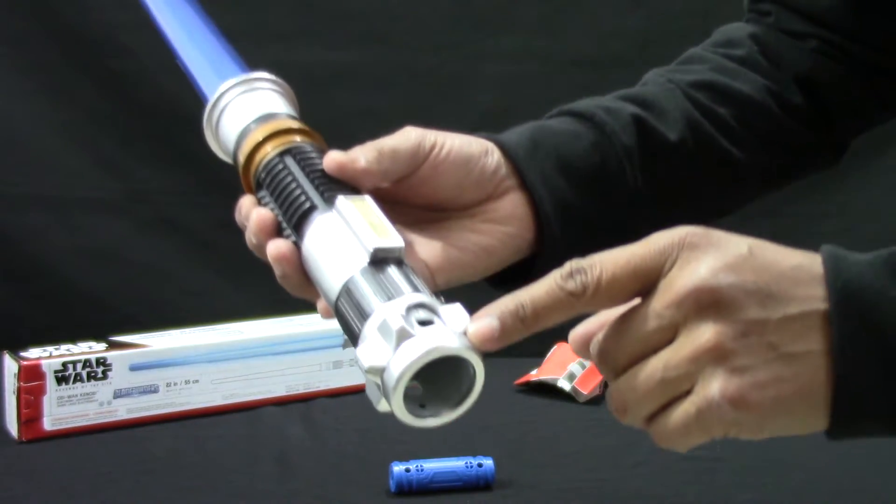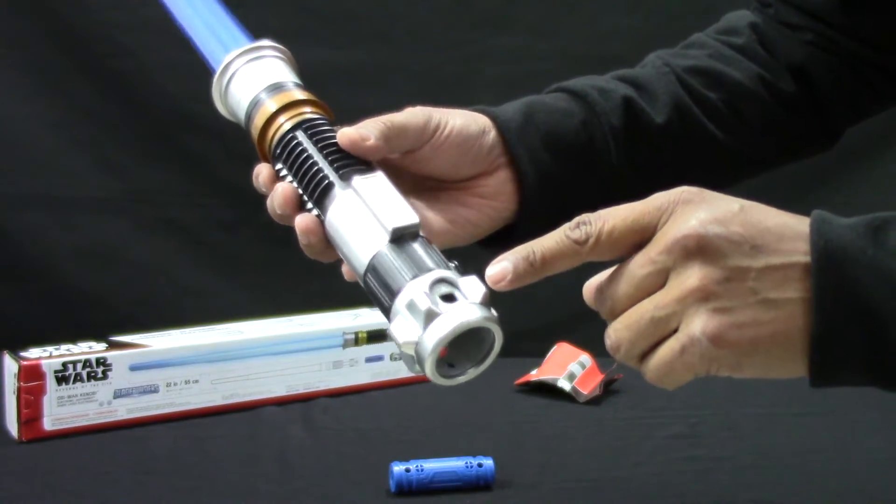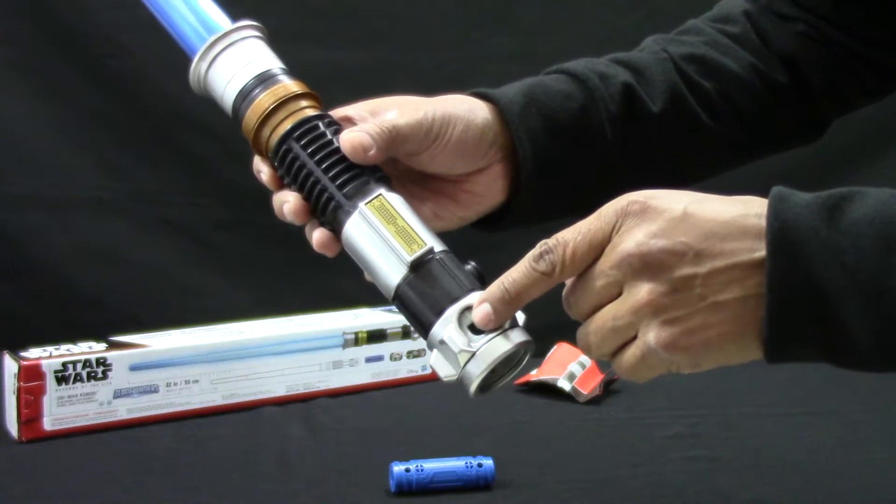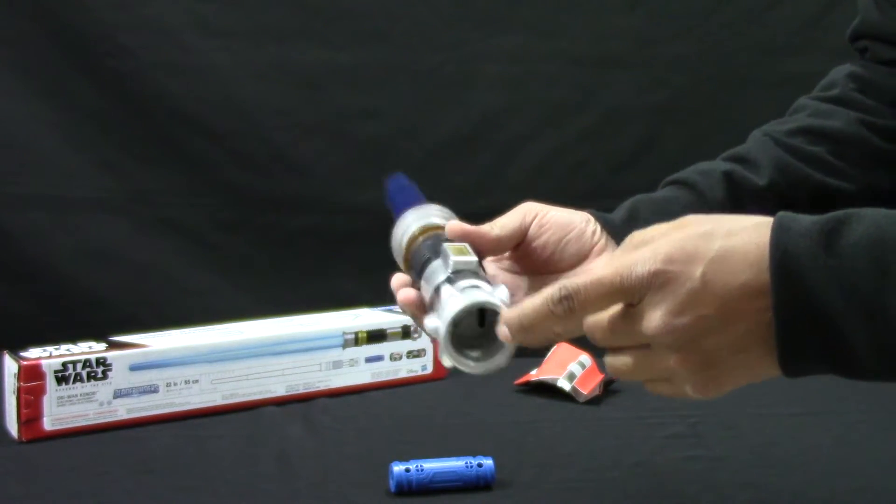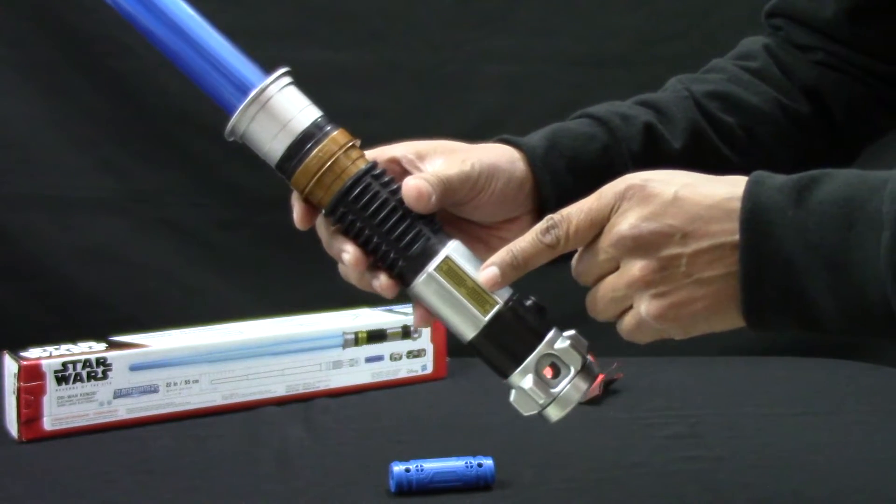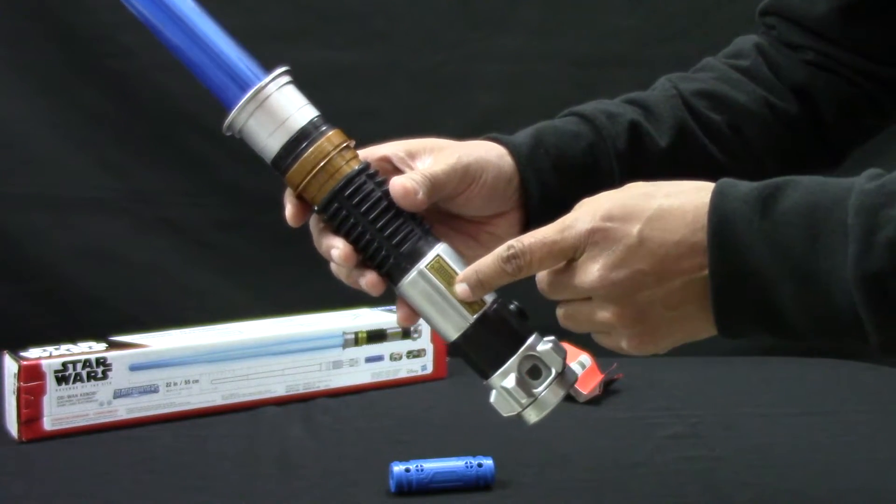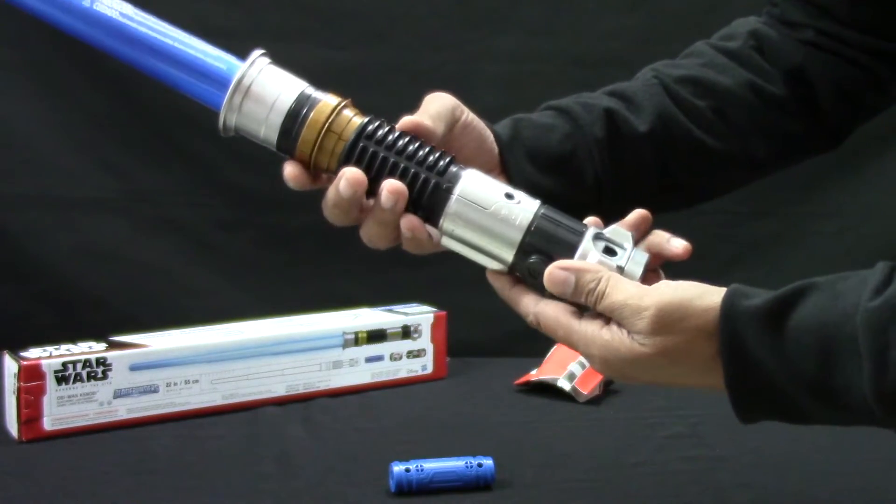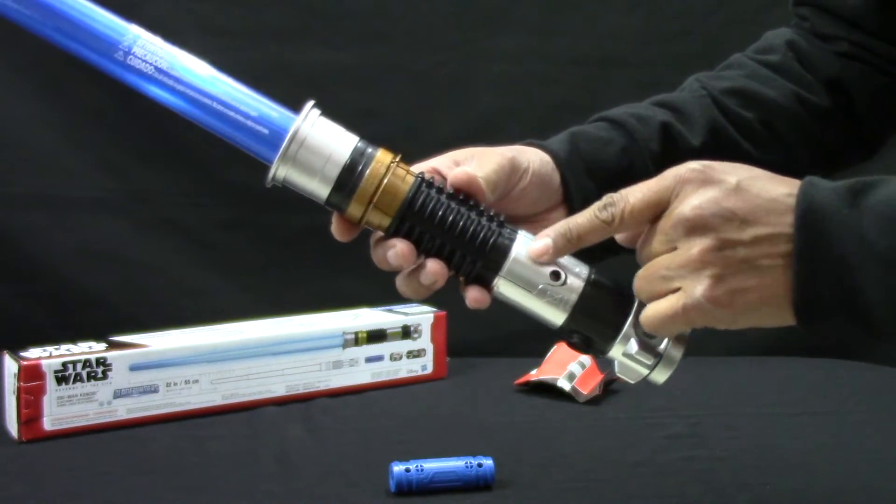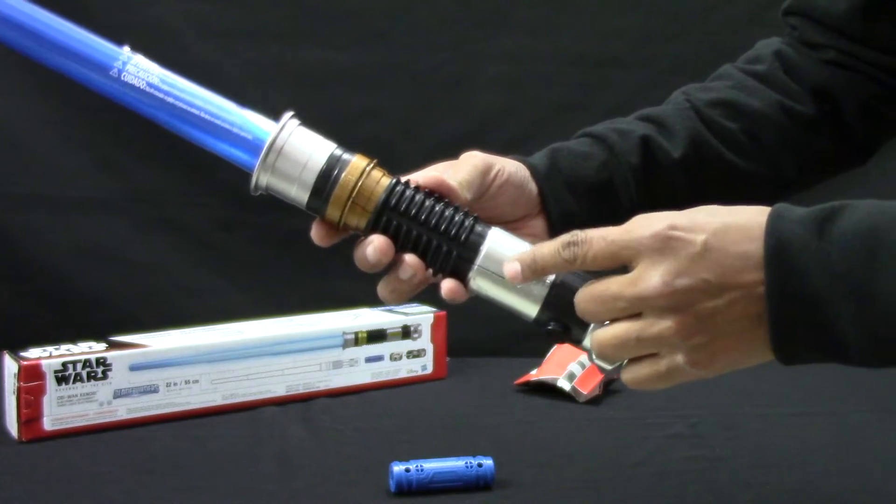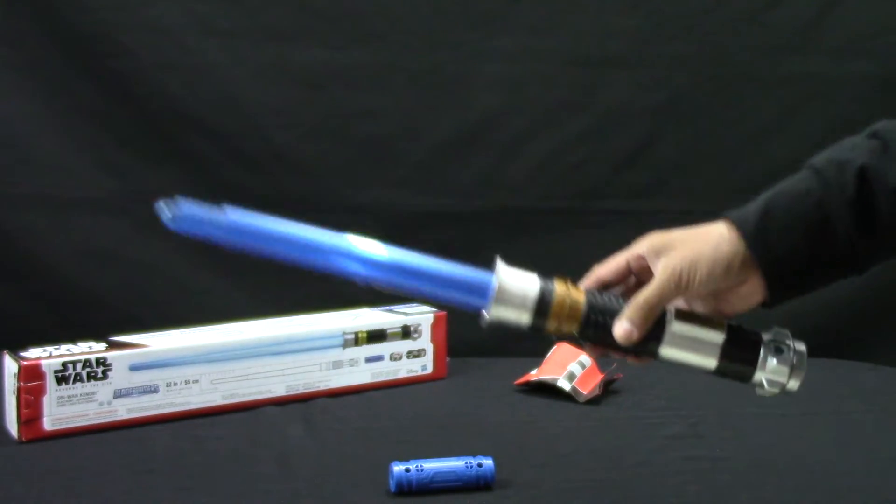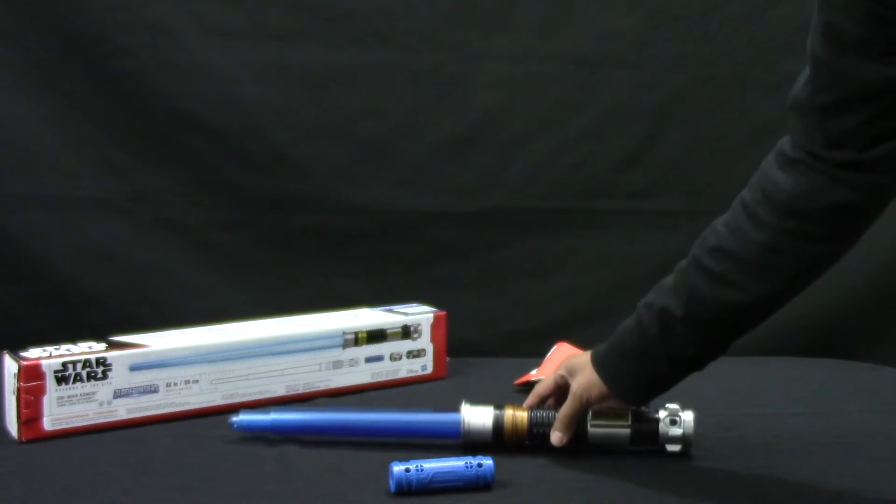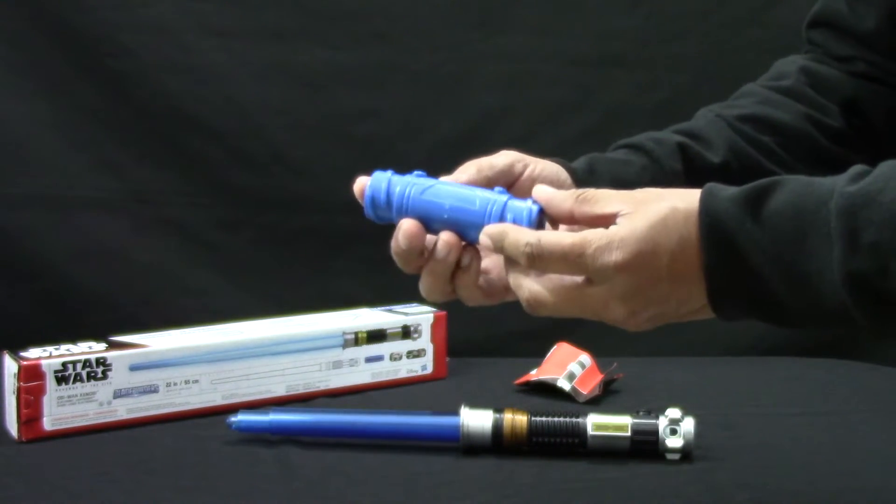Here is the hole to connect the blade builders adapter. This is the power on switch and under this cover we will place the batteries. This lightsaber uses three AAA batteries not included.